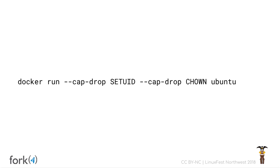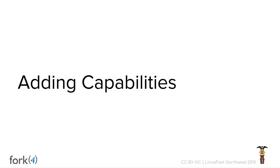Similarly, CHOWN — say your container takes file uploads and is writing them. Someone uploads a malicious file and tries to change ownership to run as root — they can't. These capabilities are pretty powerful. You may see this show up in your orchestration solutions as a simple checkbox — here are the capabilities you want to remove or add. When it calls 'docker run,' it provides these cap-drops and cap-adds for whatever you provide. You can also add capabilities with '--cap-add'.